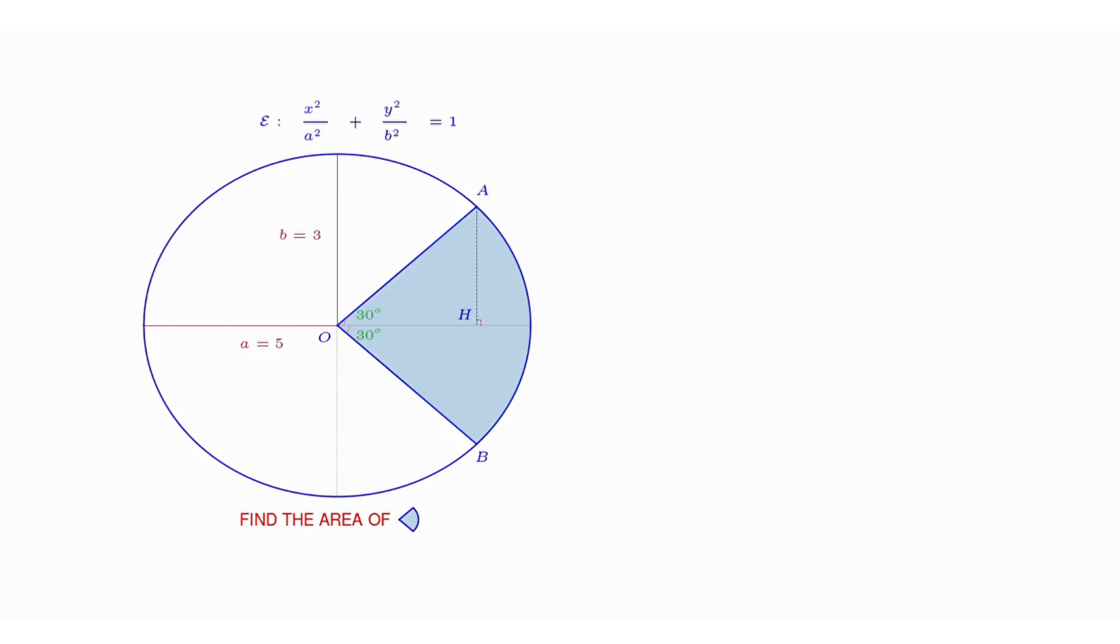The ray starting from the origin and making an angle of 30 degrees with the x-axis cuts the ellipse at point A. Similarly, the ray starting from the origin and making an angle of minus 30 degrees with the x-axis cuts the ellipse at point B.